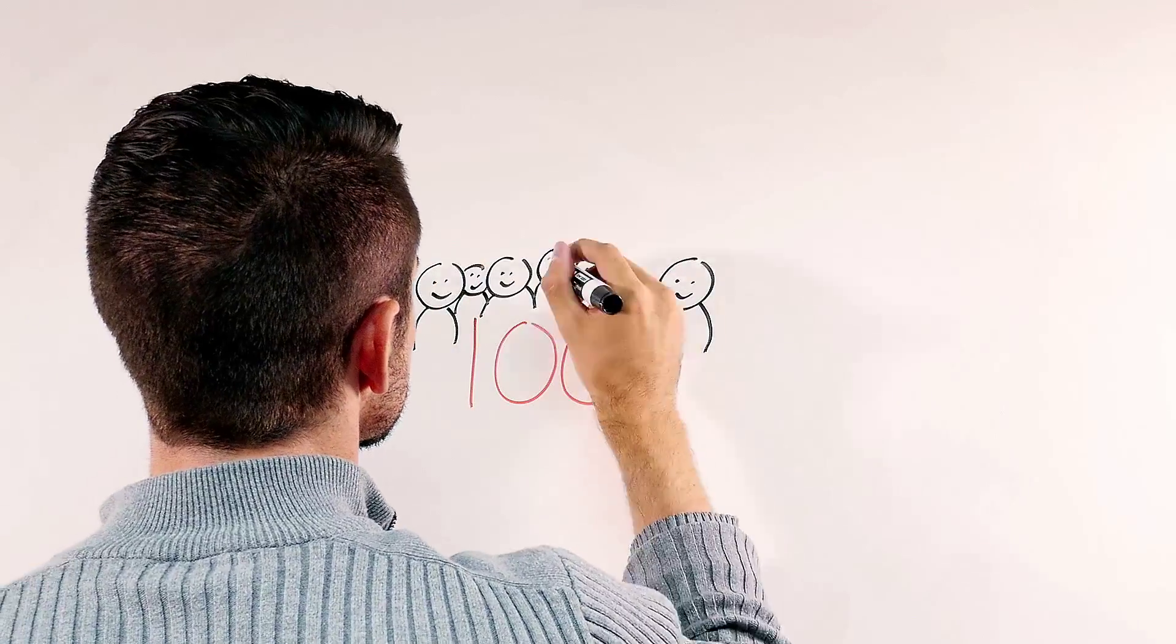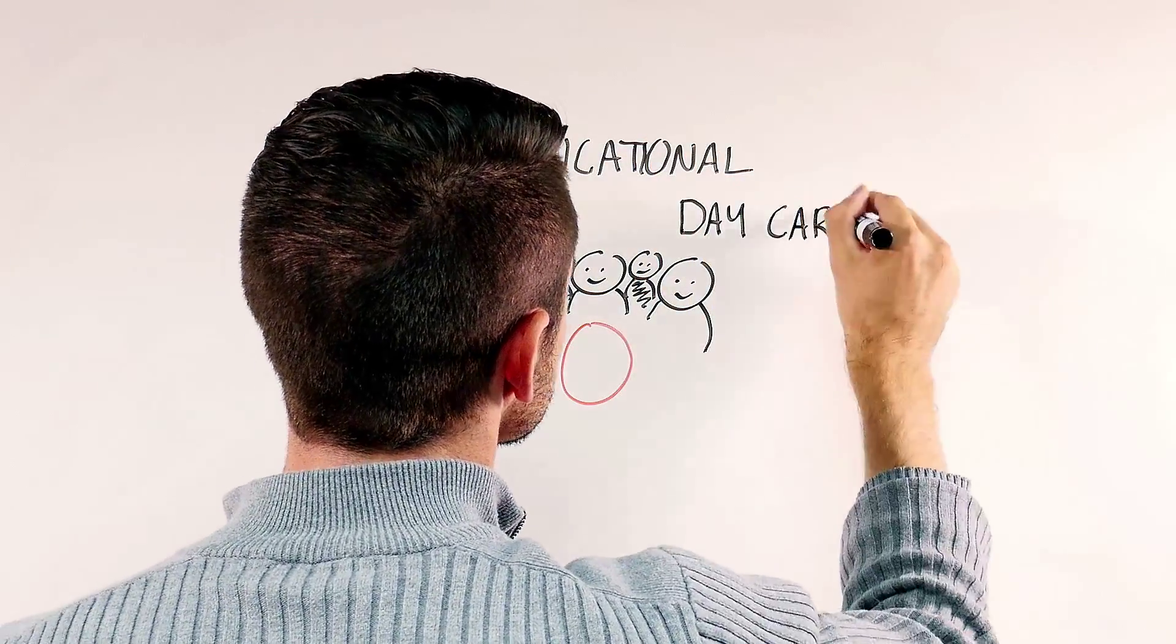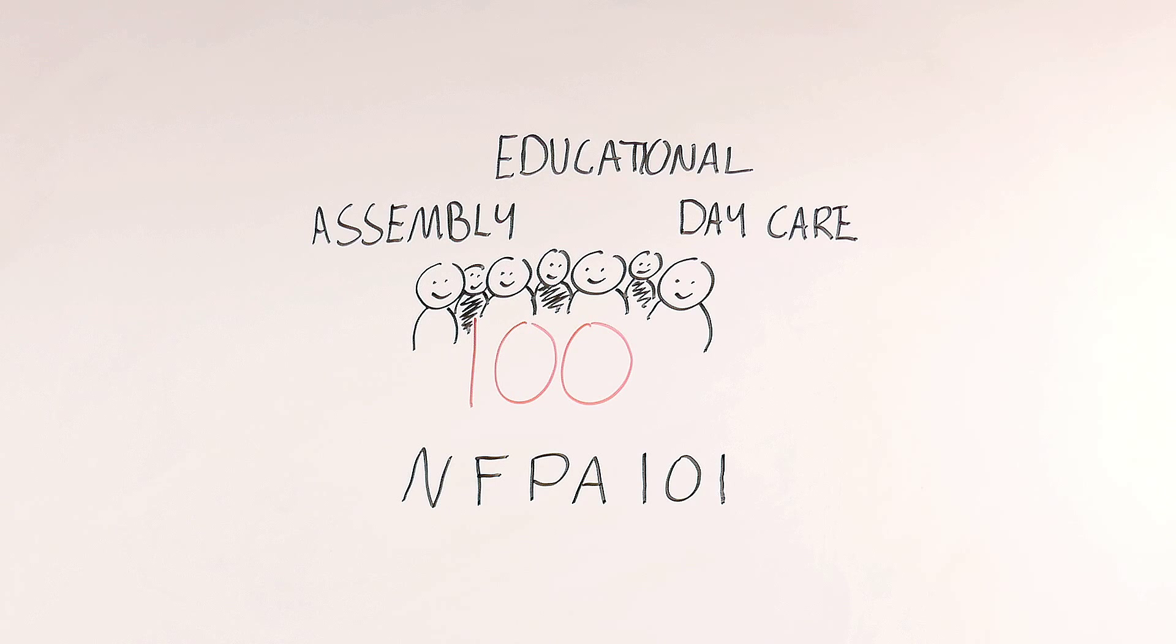NFPA 101 requires panic hardware for doors serving assembly, educational, and daycare occupancies with an occupant load of 100 people or more, and for areas with high hazard contents that have an occupant load of more than five people.